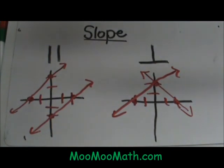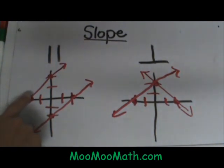What do we know about parallel lines? Parallel lines are lines that never intersect. When you are looking at a graph they are going to have the same slope because they are going to rise and run at the same rate.